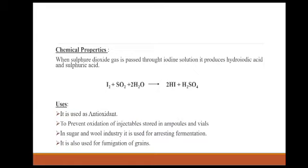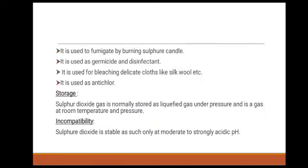Chemical properties: when sulfur dioxide gas is passed through iodine solution, it produces hydroiodic acid and sulfuric acid. That is, SO₂ reacts with iodine and water to form hydroiodic acid and sulfuric acid. Uses: it is used as an antioxidant to prevent the oxidation of injectables stored in ampoules and vials. It is used in the sugar and wool industries, for arresting fermentation, fumigation of grains, as a germicide and disinfectant, and for bleaching delicate cloths such as silk and wool.